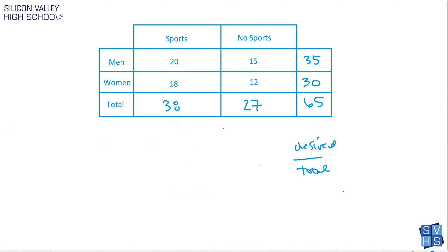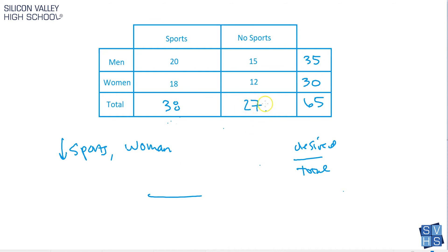Here's another scenario — I'll try to trick you. What if I said: given I select a person that does not play sports, what is the probability that it is a woman? What is my denominator? Look at the no-sports category — how many total do not play sports? That is 27. The available pool you're pulling from is 27. And how many of those are women? That is 12. So the answer is 12 out of 27.